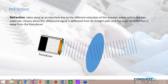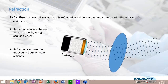Refraction is when we send sound into the body and it hits an interface, generating an off-axis reflection or transmission. We can use refraction to our benefit — enhancing image quality by using our acoustic lens to focus the beam coming back and create a better image.